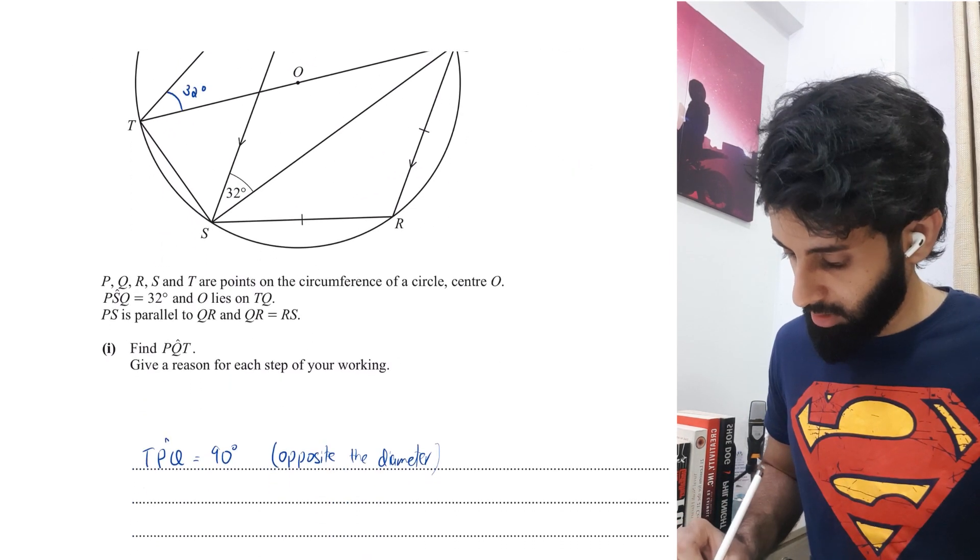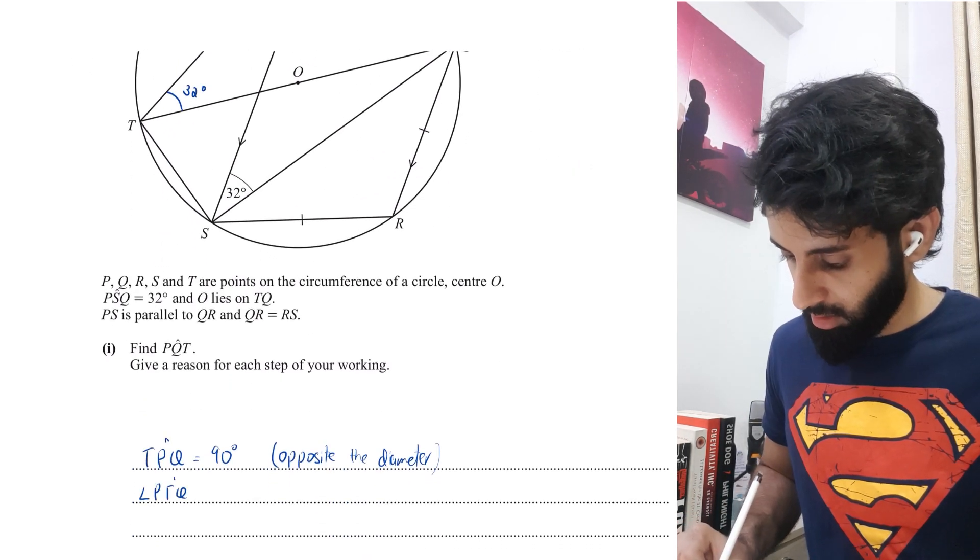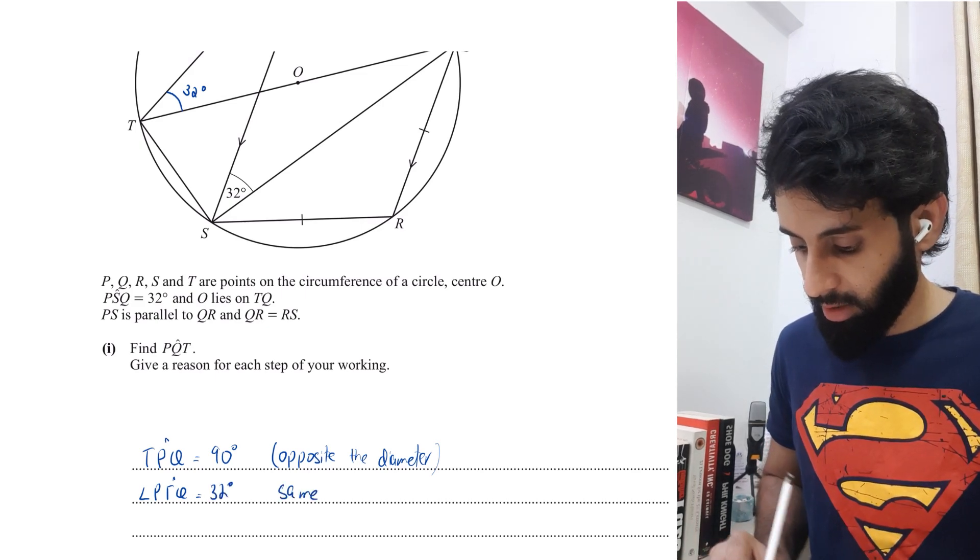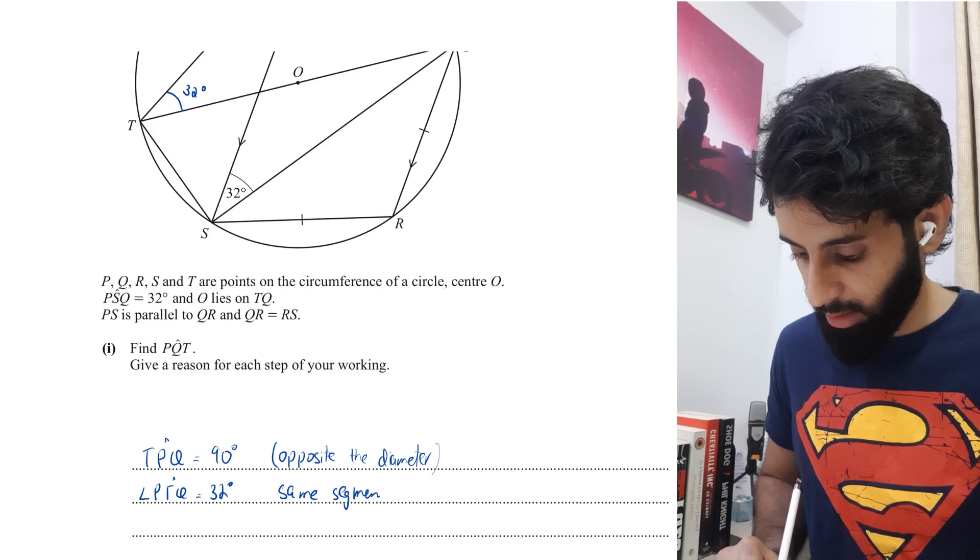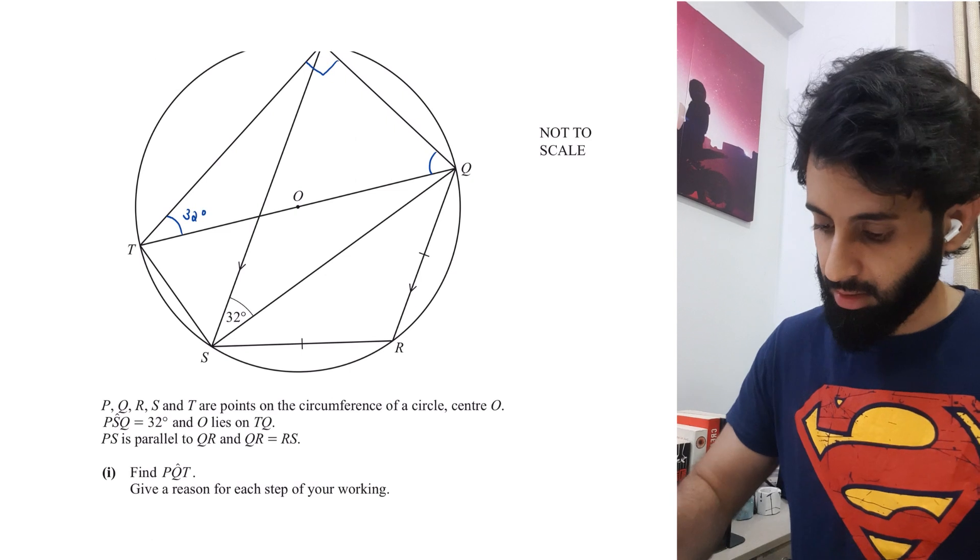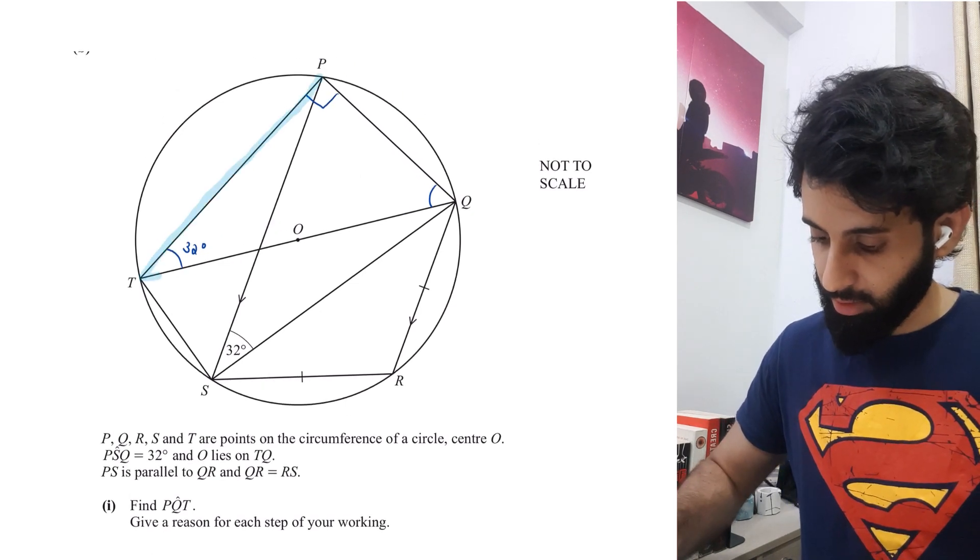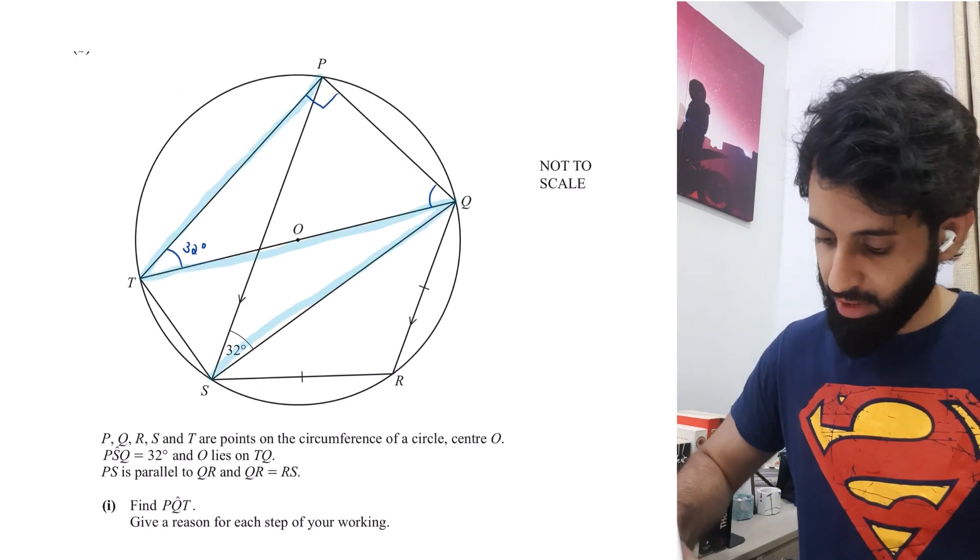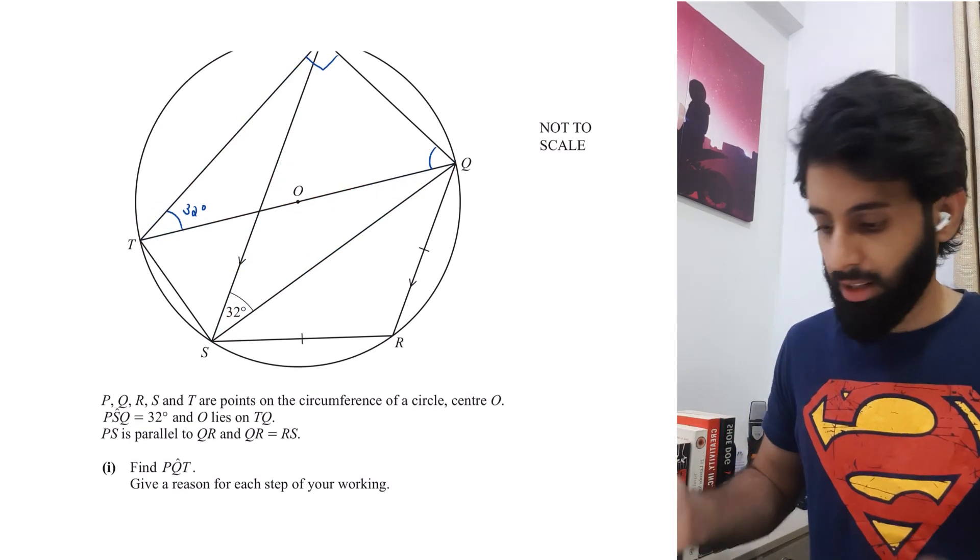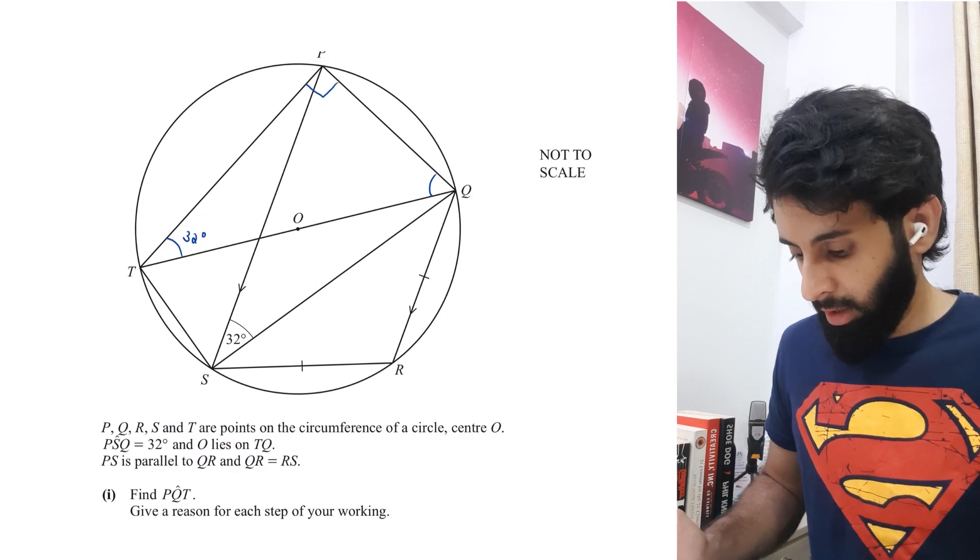So angle PTQ equals 32 degrees because of the property called same segment. Some of you call this the butterfly property because it kind of looks like a butterfly. But that's not what we mention in the exam - it's officially called same segment. That just makes it easy for us to remember.